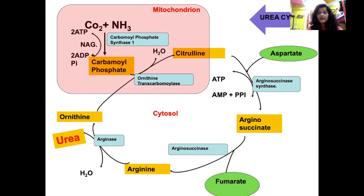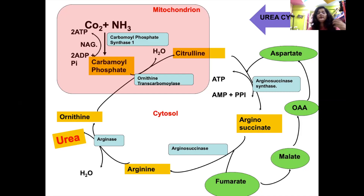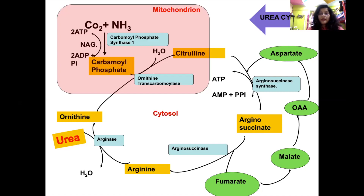Out of five steps, two occur in the mitochondria and three in the cytoplasm. The urea cycle is linked with the TCA cycle: fumarate formed in step four of the urea cycle enters the TCA cycle and is converted to malate and then oxaloacetate. This oxaloacetate undergoes transamination to form aspartate, which re-enters the urea cycle. This is the important link between the urea cycle and the Krebs cycle.